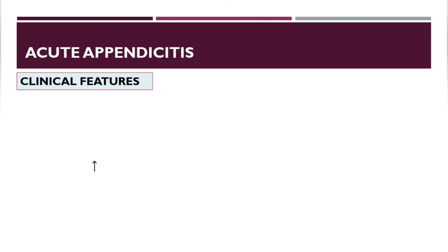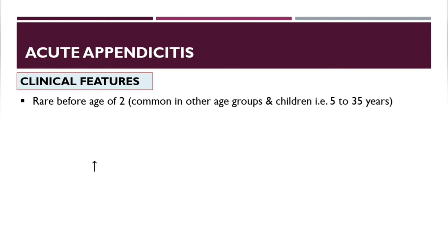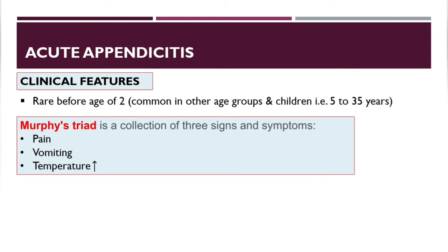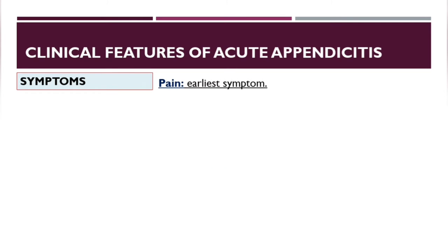Regarding clinical features, acute appendicitis is rare before age two and common in other age groups, particularly ages five to thirty-five. There is Murphy's triad — a collection of three signs and symptoms: pain, vomiting, and high temperature (PVT). Pain is the earliest symptom.